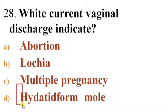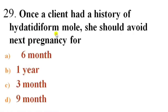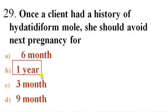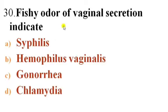Next question: White currant vaginal discharge indicates — Options: A) Abortion, B) Lochia, C) Multiple pregnancy, D) Hydatidiform mole. Answer is D — Hydatidiform mole. Next question: Once a client has had a history of hydatidiform mole, she should avoid the next pregnancy for — Options: A) Six months, B) One year, C) Three months, D) Nine months. Answer is B — one year. It is important to avoid pregnancy and use a reliable contraceptive for six to twelve months after treatment for a molar pregnancy, as women who get pregnant too soon have a higher risk of another molar pregnancy.